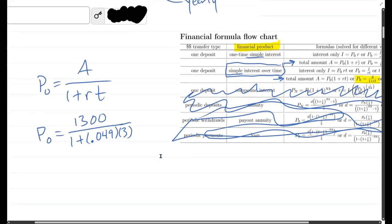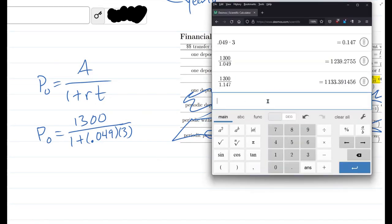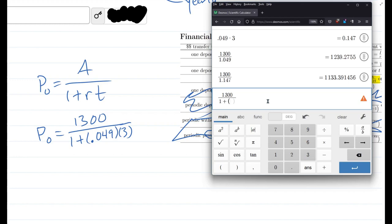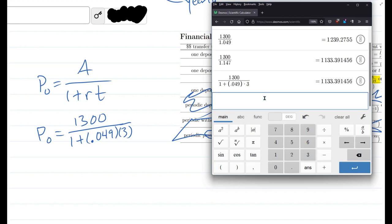So all I need to do is type this into the calculator. I've done this computation already but we'll do it laid out this way: 1300 in the numerator, and I hit the slash to get to the denominator, 1 plus parentheses 0.049 times 3. There we go, so we get...